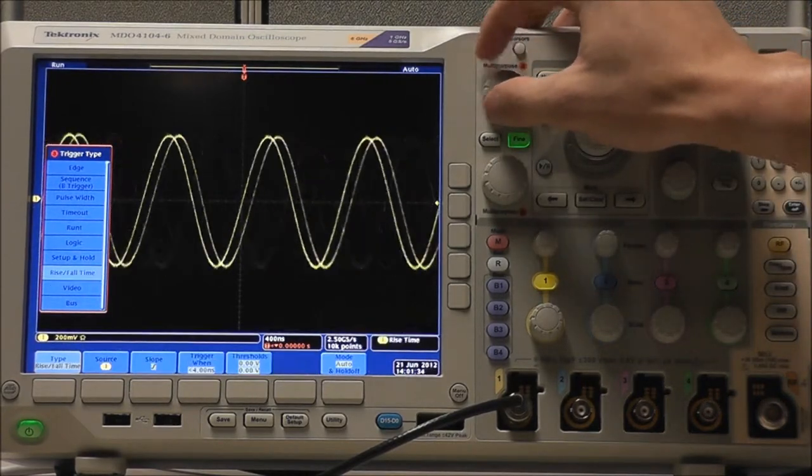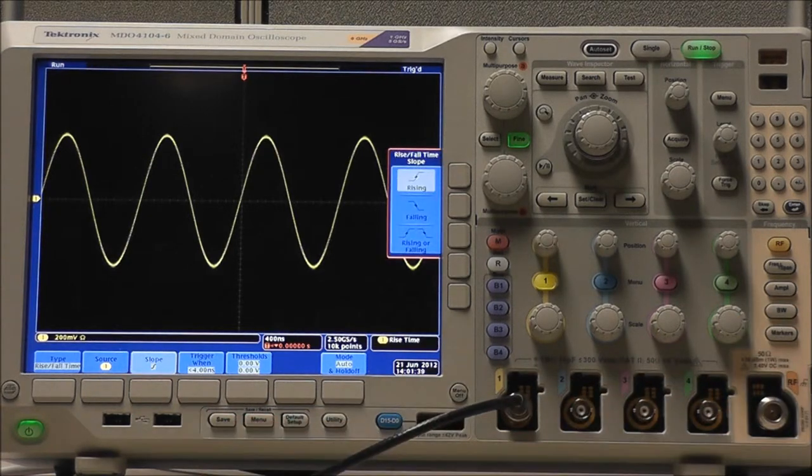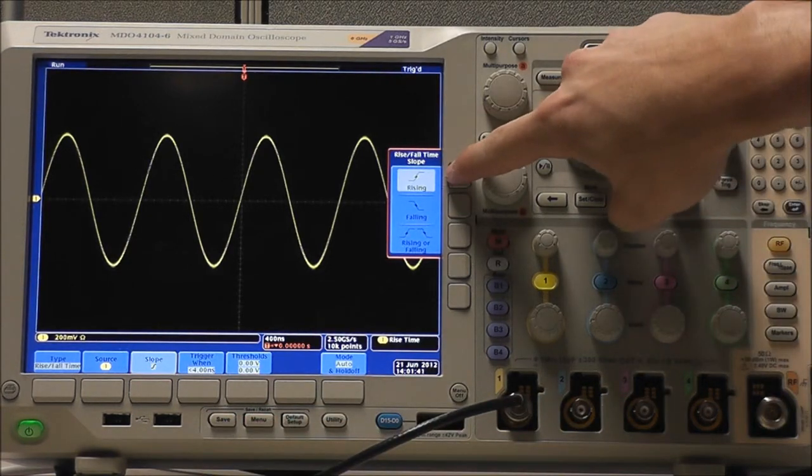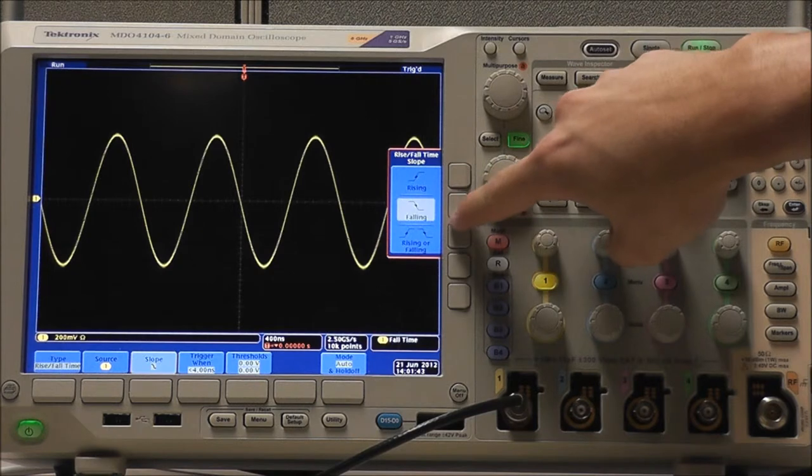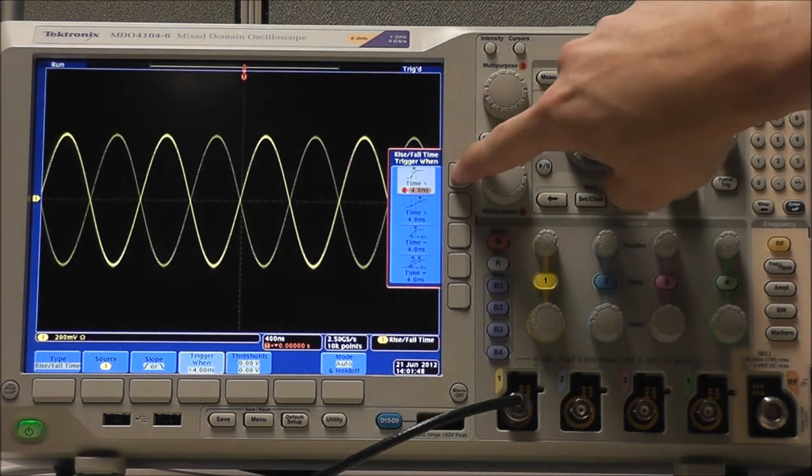Selecting Rise and Fall Time allows us to trigger on Rise and Fall Times. Selecting Slope, we can choose to trigger on a Rising Slope, Falling Slope, or either Rising or Falling Slope.